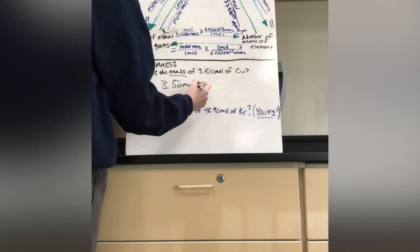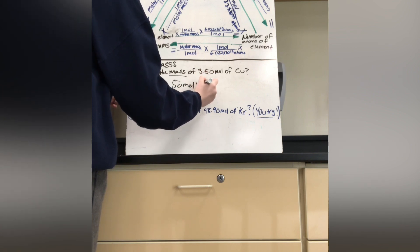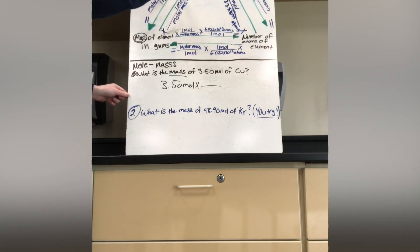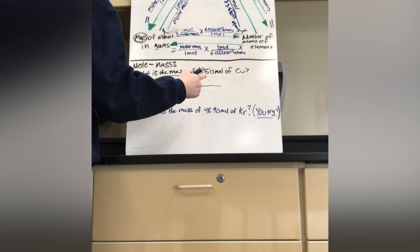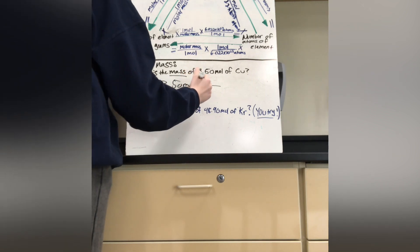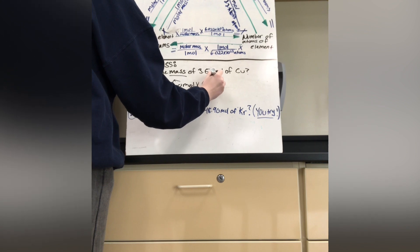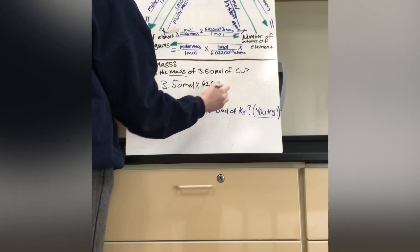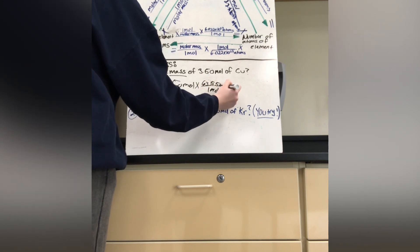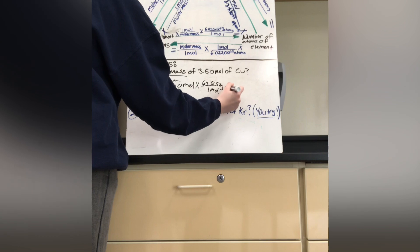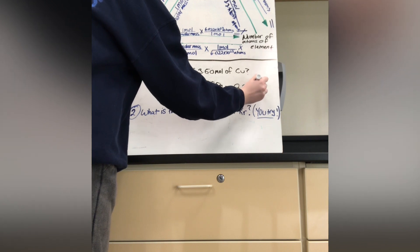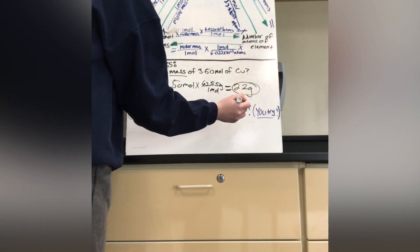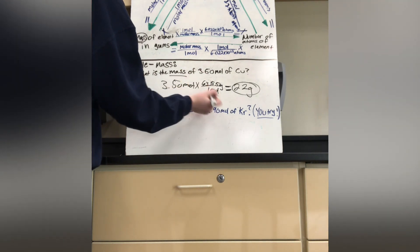So it would be 3.50 mol. Please put your units on. It's important. Multiplied by the molar mass of the element, of copper, which should be 63.55 grams over 1 mol. And that should equal 222 grams. Okay? And we would also cross out our moles. Okay?